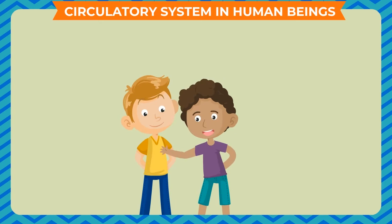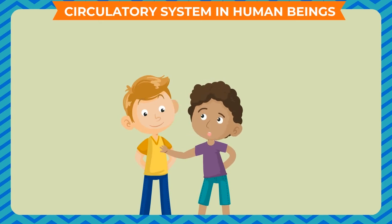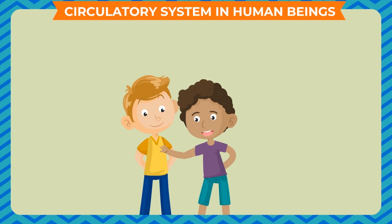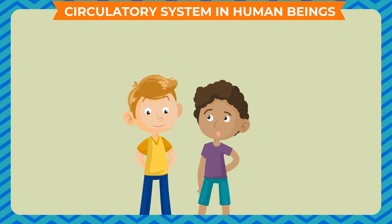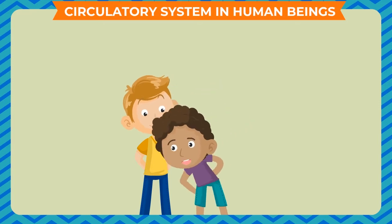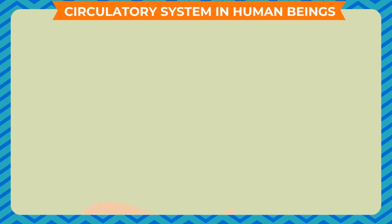Place your palm on the left of your friend's chest. You will feel that the heart is beating with a regular rhythm. Now place your ear at the same place; a distinct sound is heard, which is known as heartbeat. You can also measure the pulse of your friend by placing your index finger and middle finger on the underside of the wrist. You can feel the artery throbbing. Count the number of throbs in one minute to get the pulse rate.